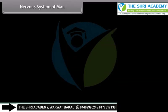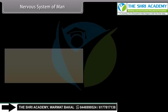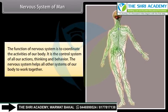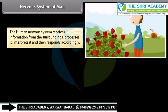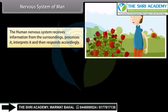The function of the nervous system is to coordinate the activities of our body. It is the control system of all our actions, thinking, and behavior. The nervous system helps all other systems of our body to work together. The human nervous system receives information from the surroundings, processes it, interprets it, and then responds accordingly.